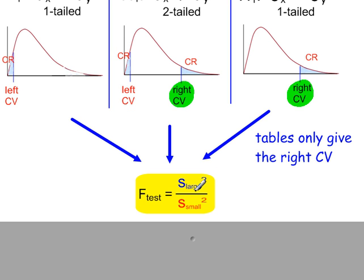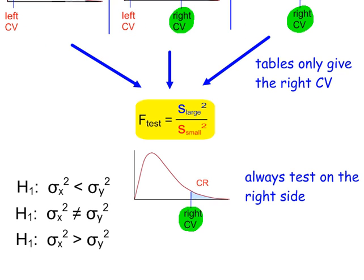If it were the small value divided by the large value, we would need the left-side critical values, which complicates things. So to keep things simple, we always use the formula large divided by small, and we always work with the right-side critical values. Irrespective of what is written for H1, we always use the right-hand tail of the F distribution.